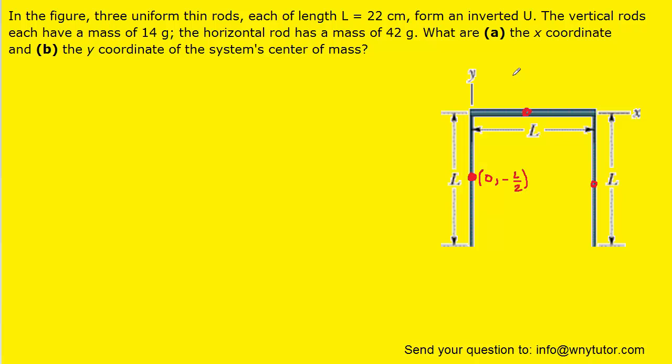For this point here, the coordinates would be l divided by 2, comma, 0. And then for this point over here, we would have coordinates l, comma, negative l divided by 2.